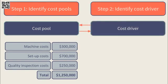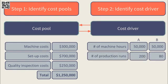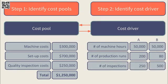Step 2 is to identify the cost driver for each cost pool. We need to determine what is driving each of the three overhead types. The cost drivers are typically given in any activity-based costing scenario, and it is the student's job to link the cost driver to the cost pool. Machine costs are driven by machine time (number of machine hours); setup costs are determined by the number of production runs; and quality inspection costs are driven by the number of inspections carried out.